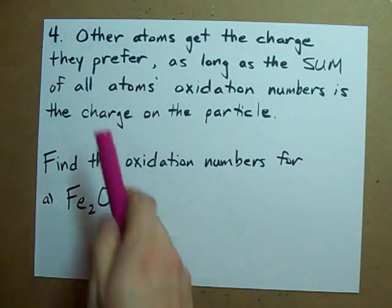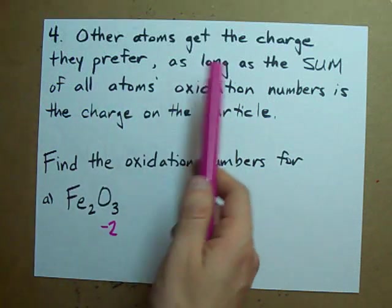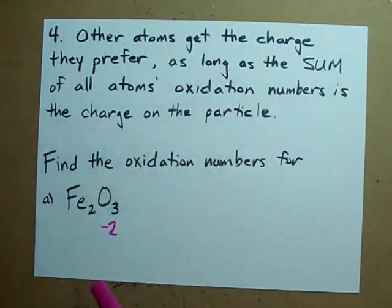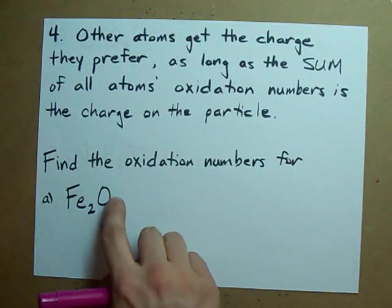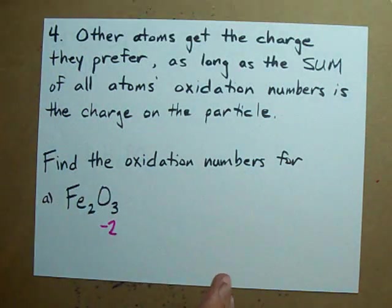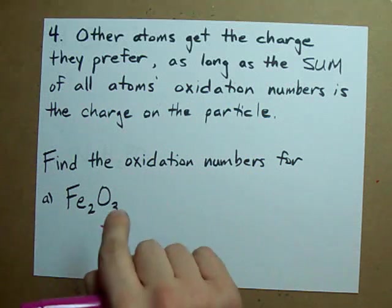Step four: other atoms get the charge they prefer. Just make sure the sum of the oxidation numbers is the total charge. Well, the total charge on this is zero, so all these oxidation numbers better add up to zero.